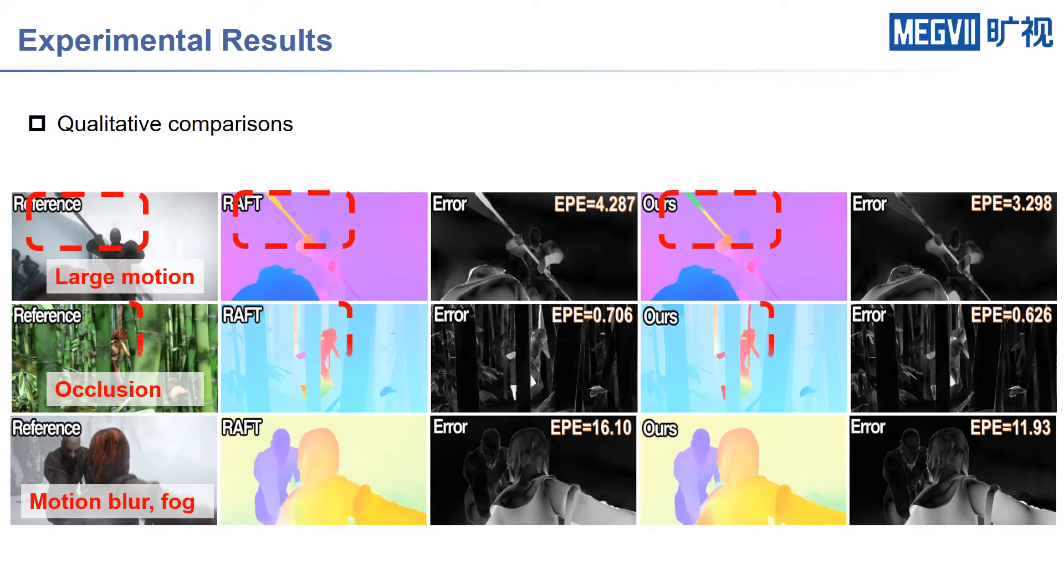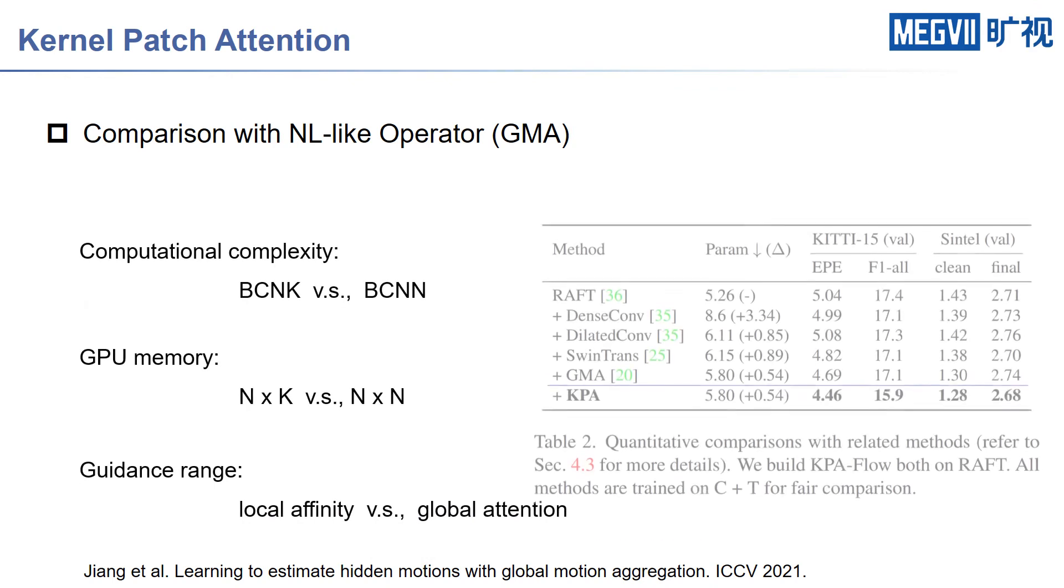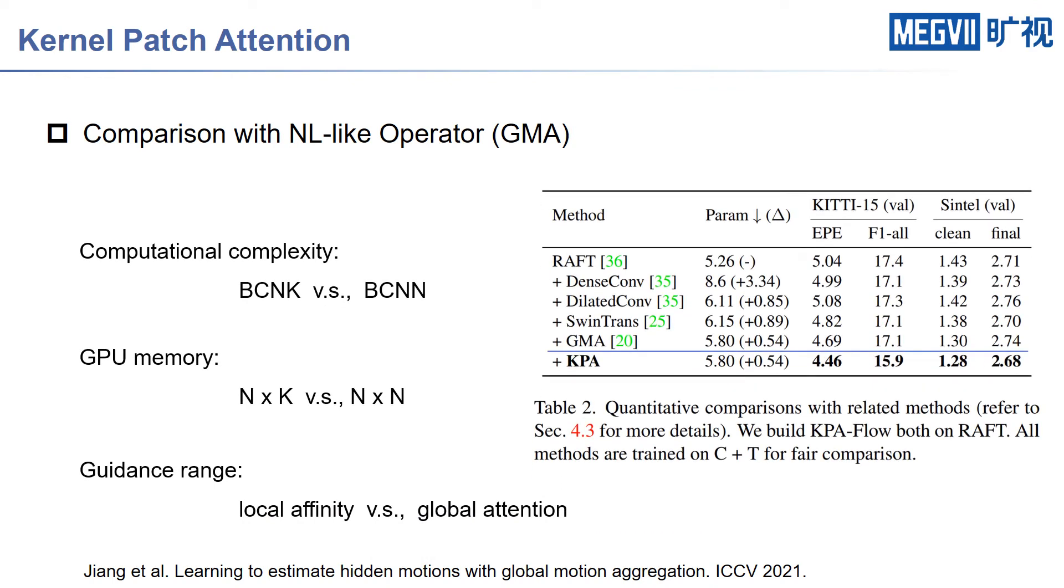smoothness constraint, which helps to reduce the matching uncertainty and produce more accurate and smooth flow fields. In comparison with global non-local-like operators, our KPA achieves better performance with less computational overhead.